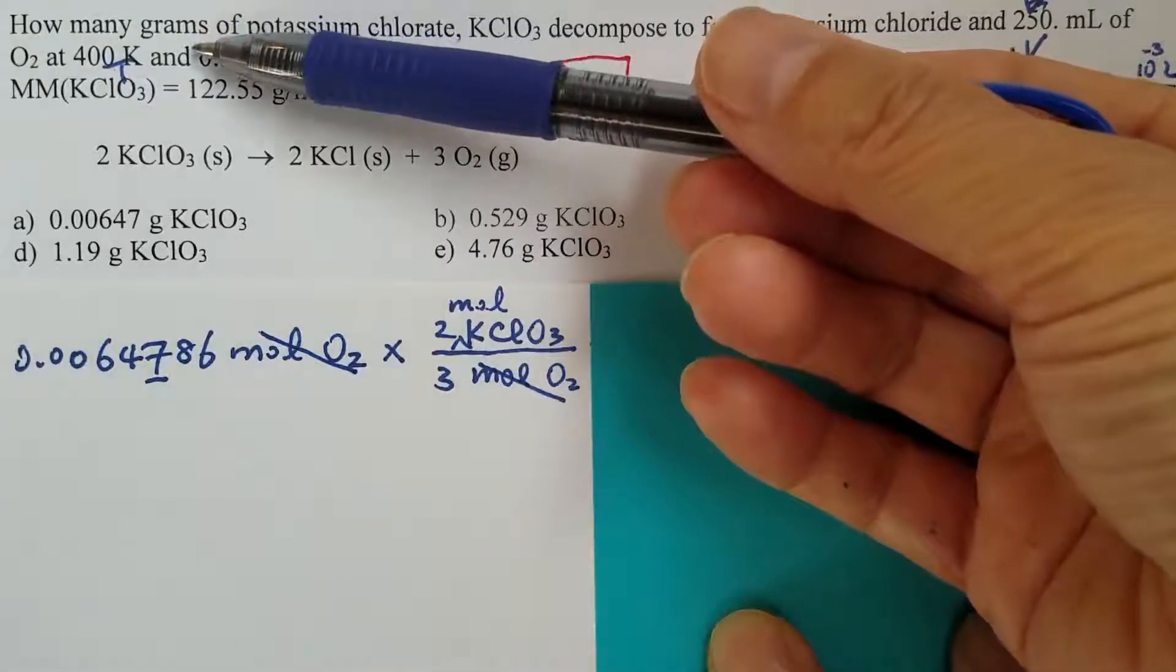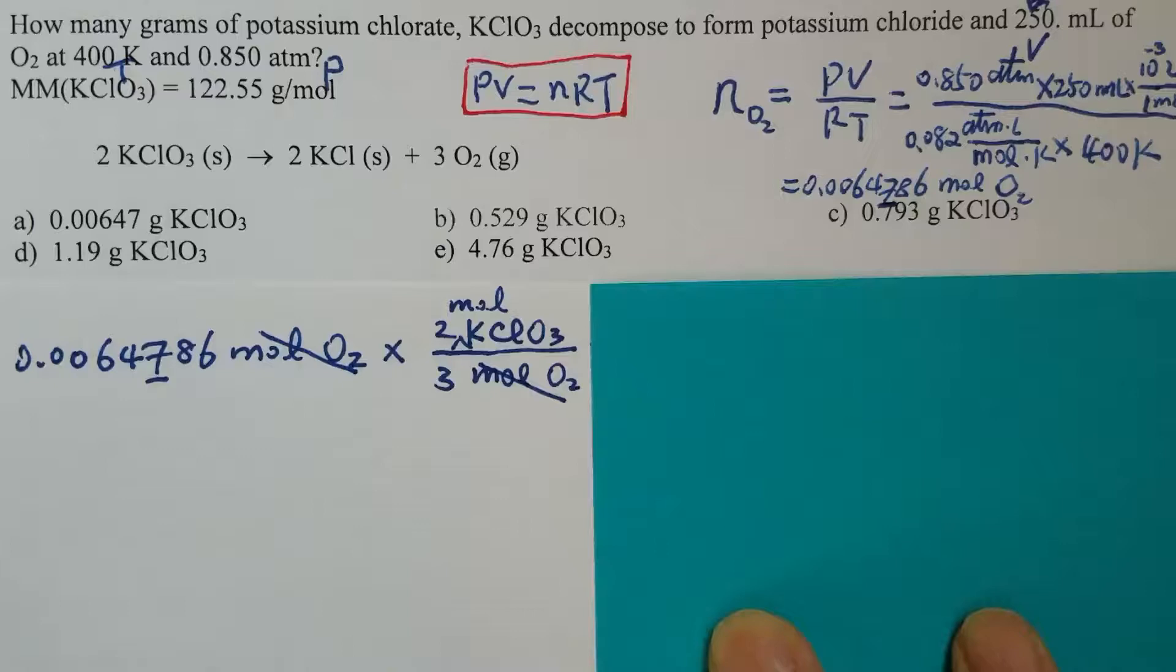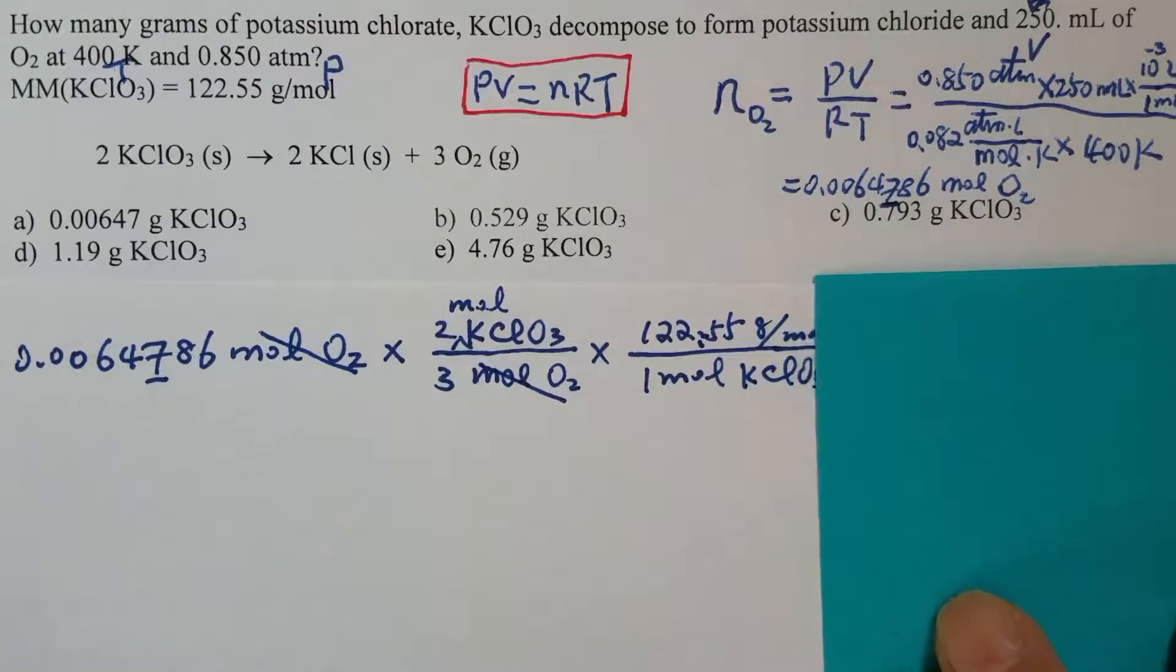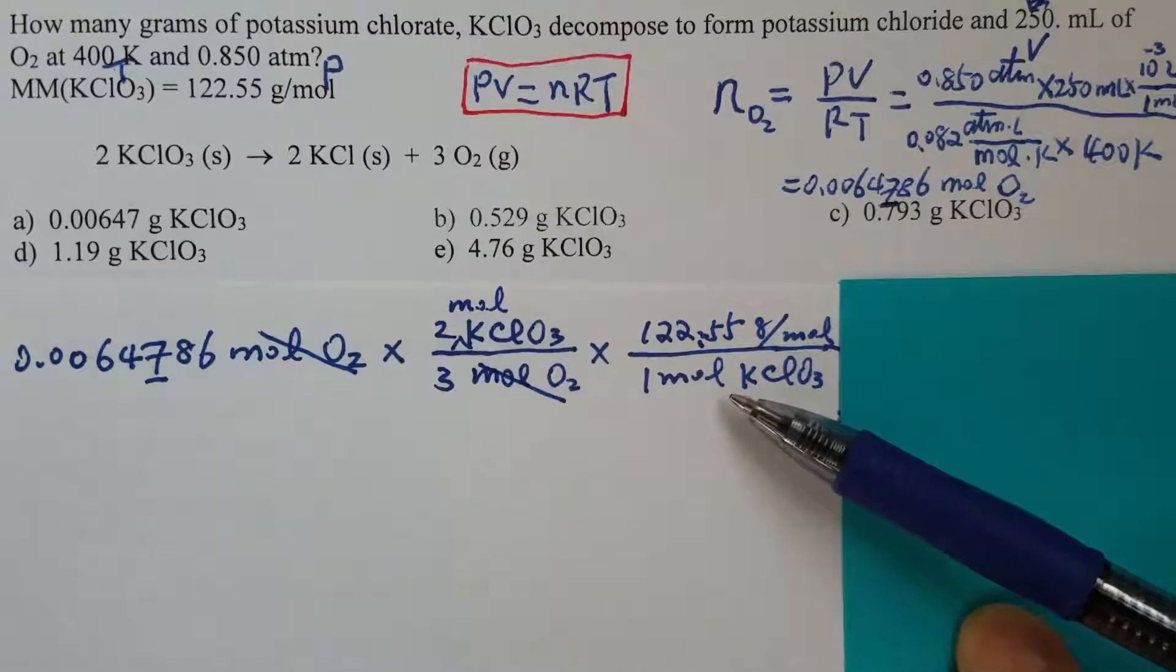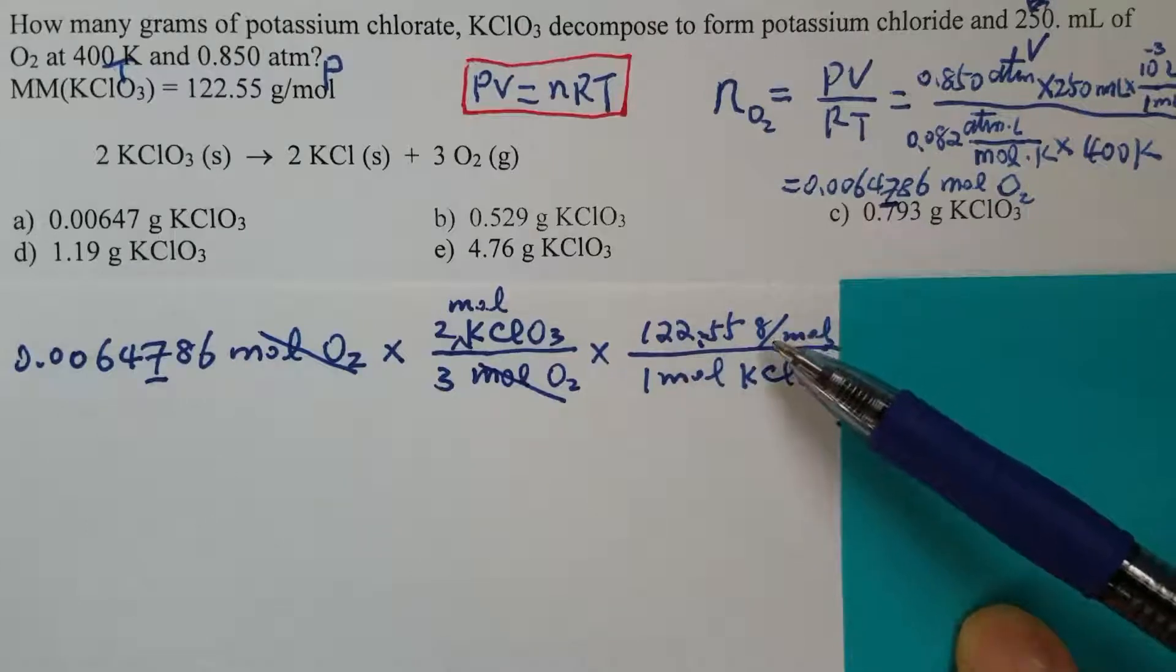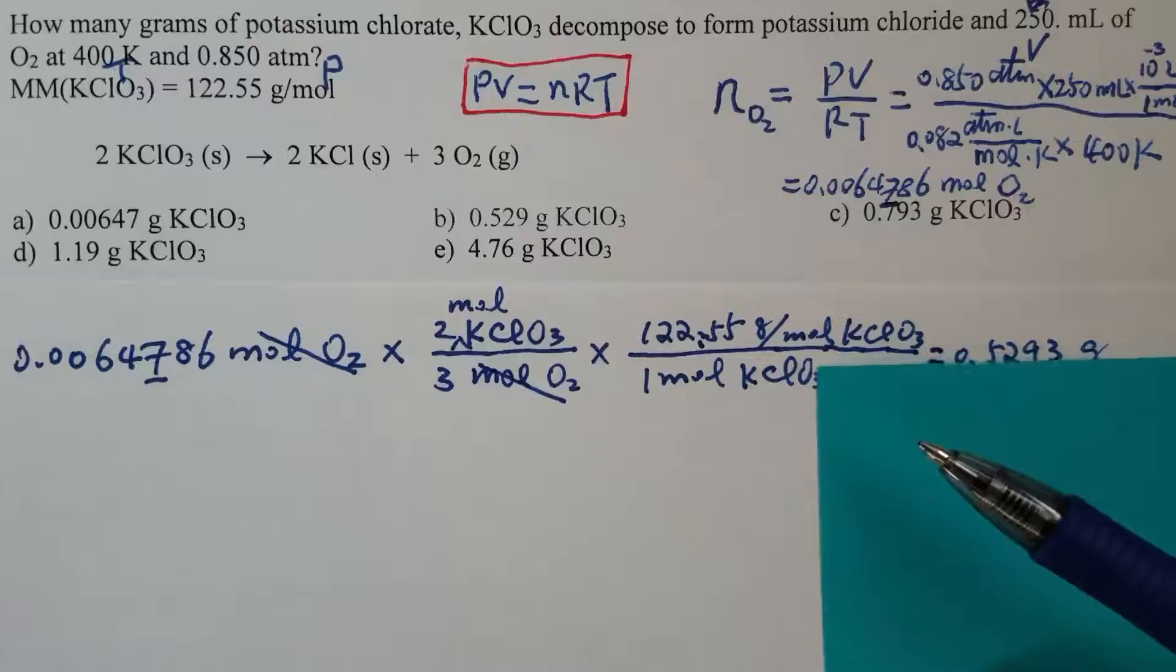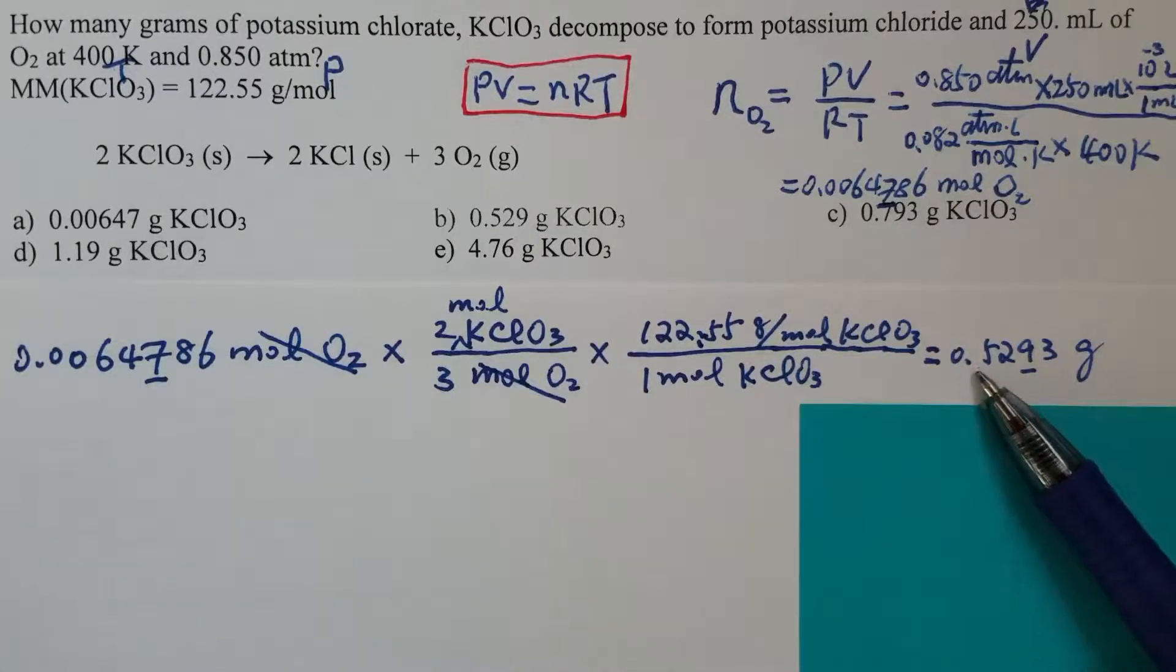But what we are asked to find out is the number of grams. Then the next step is convert from moles of potassium chlorate to grams using the molar mass of potassium chlorate. Now we get an answer.